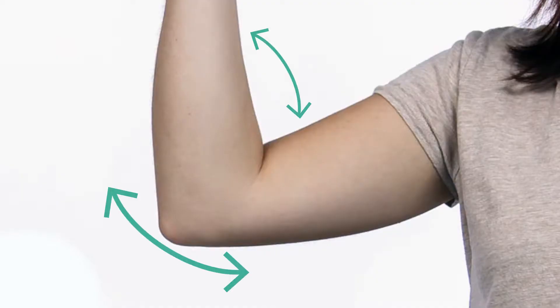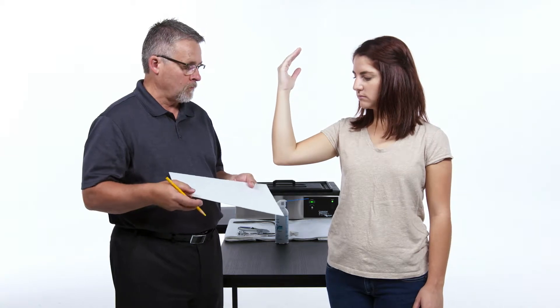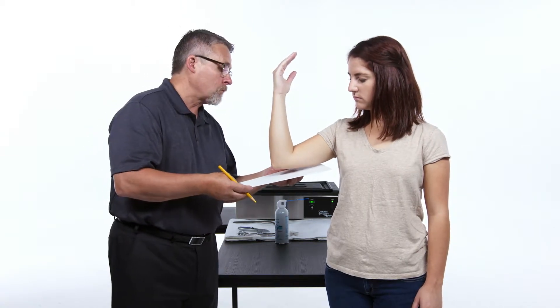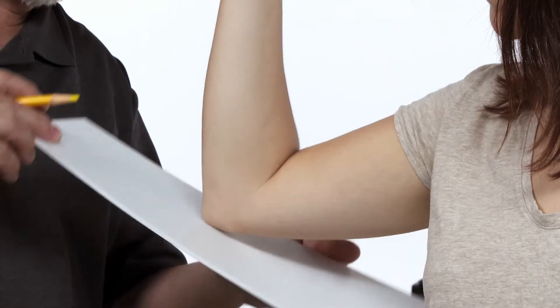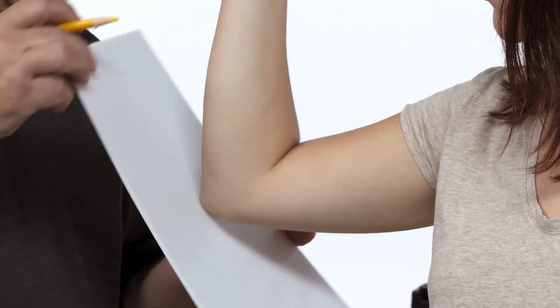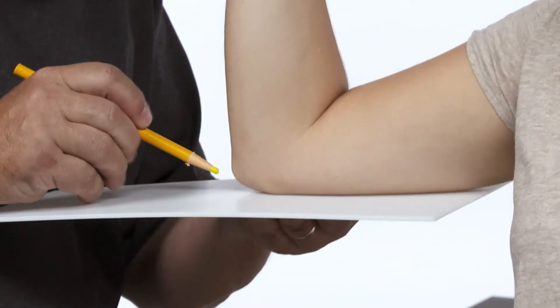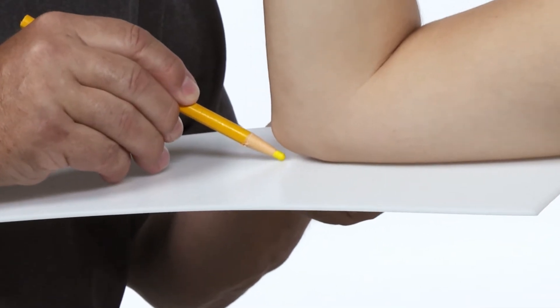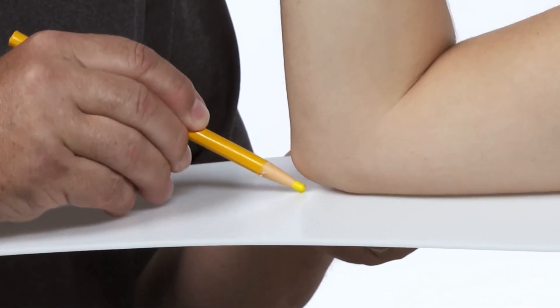Position patient's elbow to desired flexion extension. Place the unheated material against the patient's arm to ensure the proximal and distal borders are 2 thirds the distance to the elbow. Place a mark on the splint material where it touches the olecranon with a grease pencil.